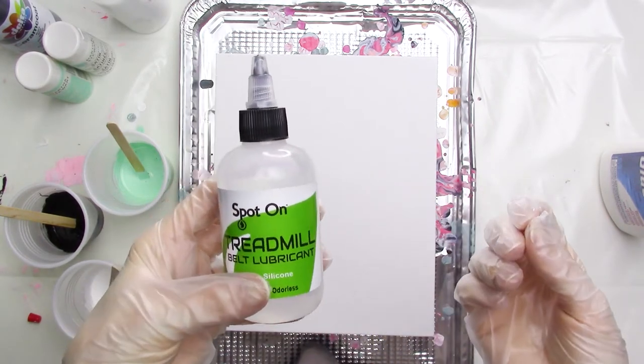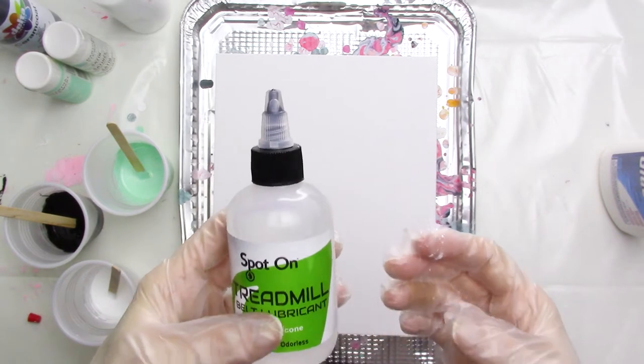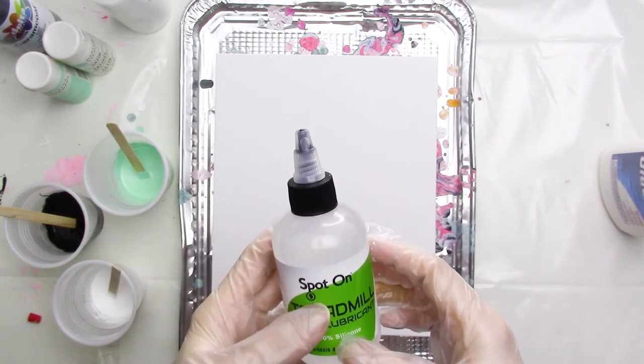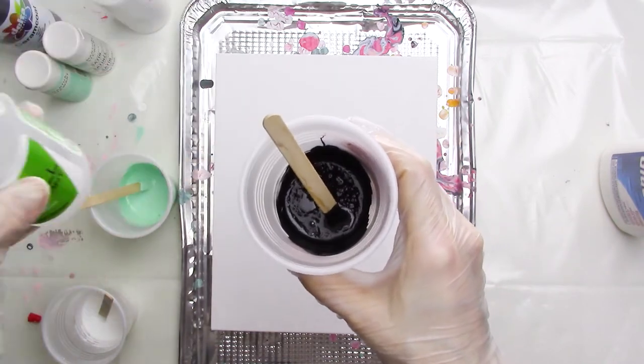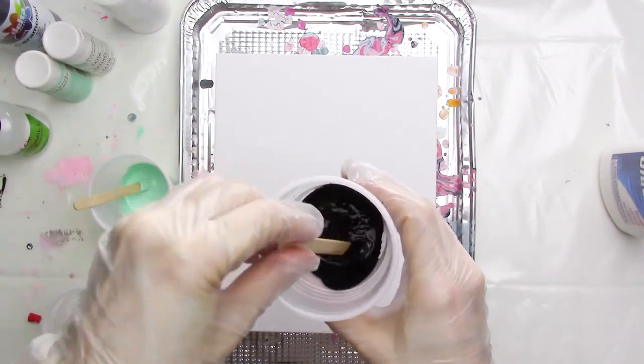I decided not to add any silicone oil to the white paint. I'm just going to add it to the beach glass and black paints, and I'll add 4 drops of oil to each. After I add the silicone oil, I'll stir the paint to combine.